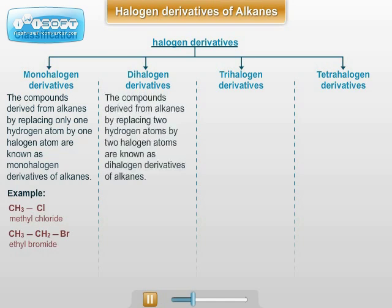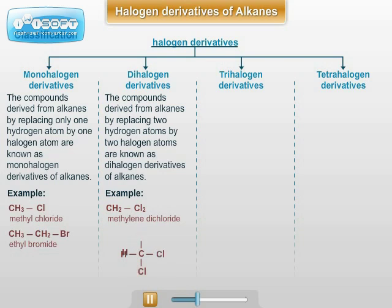Dihalogen Derivatives of Alkanes: The compounds derived from alkanes by replacing two hydrogen atoms by two halogen atoms are known as Dihalogen Derivatives of Alkanes. Example: CH2Cl2, that is Methylene Dichloride; CH2Cl-CH2Cl, that is Ethylene Dichloride.